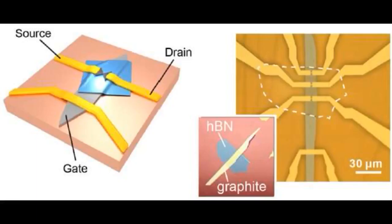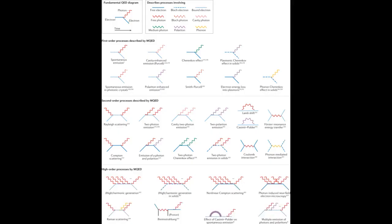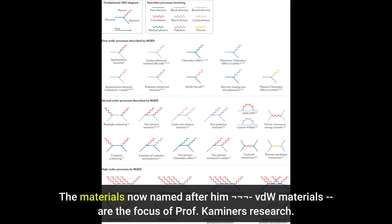Another Nobel laureate that should be mentioned before returning to the present study is Johannes Diderik van der Waals, who won the Nobel Prize in Physics exactly 100 years earlier, in 1910. The materials now named after him, VDW materials, are the focus of Professor Kaminer's research.